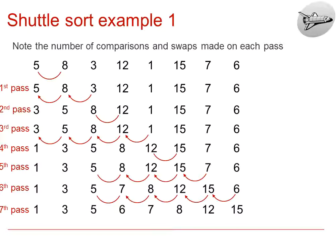In the third pass, we'll compare the 12 with the 8, and there is no swap. So the pass ends. At the end of the third pass, therefore, you can see there is no difference in the list.